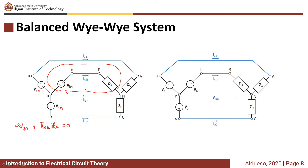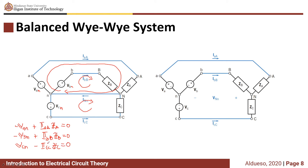Similarly, for IBB we perform KVL at the phase B loop: negative VBN plus IBB times ZB equals zero. And for VCN and ICC, applying KVL at the phase C loop: VCN minus ICC times ZC equals zero. So it is easy to solve the line currents when there is a neutral wire.